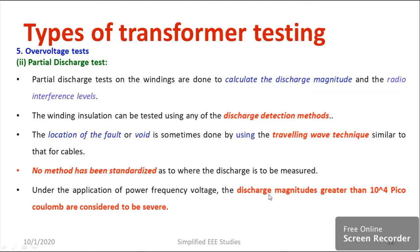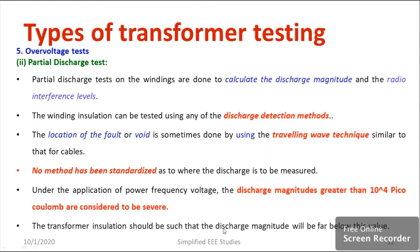After comparing with the waveforms in the discharge detection method, if you find the discharge magnitude more than 10^4 picocoulombs, there is a severe fault happening in your transformer winding and you must immediately replace it. In the case of a transformer, the winding insulation should be such that the discharge magnitude is less than 10^4 picocoulombs — if it exceeds that, there is something severe happening in the transformer winding insulation.